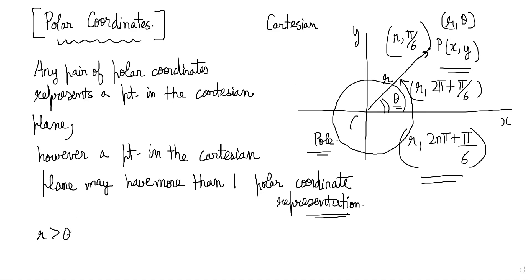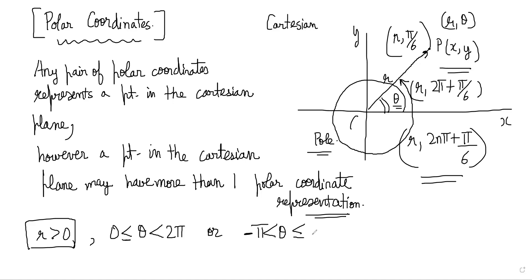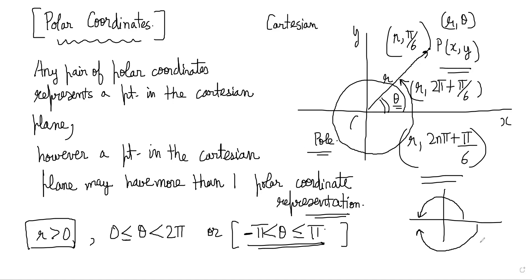To get a one-to-one correspondence, we make restrictions: r should be greater than 0, and we restrict the angle to 0 ≤ theta < 2pi. Alternatively, we can use minus pi < theta ≤ pi. With that representation, angles in the first and second quadrants are positive, while for the third and fourth quadrants the angles are negative, measured clockwise.